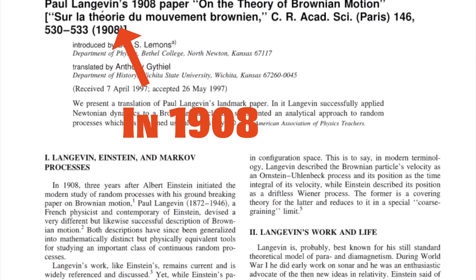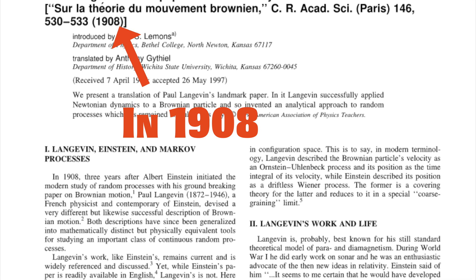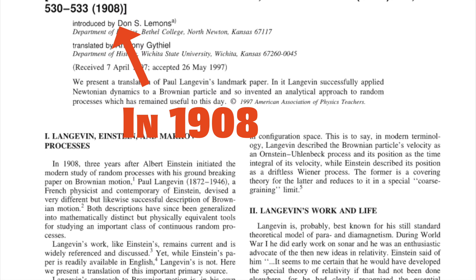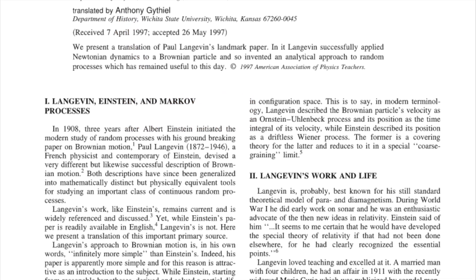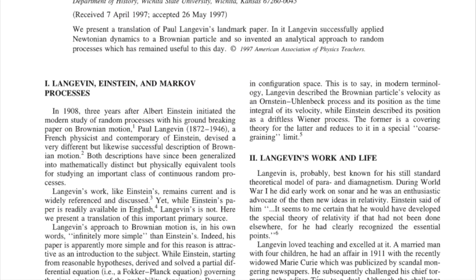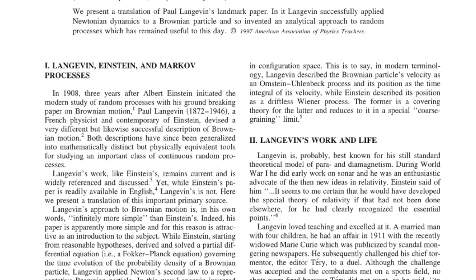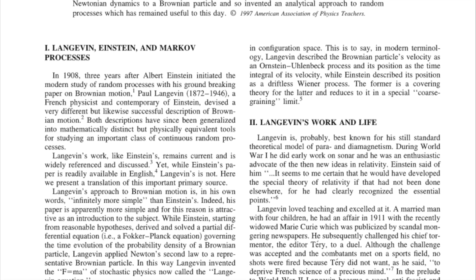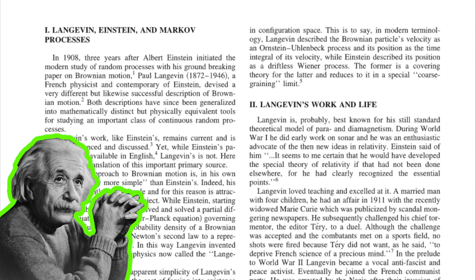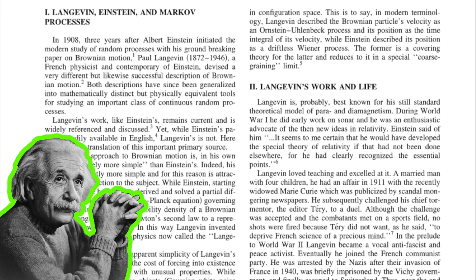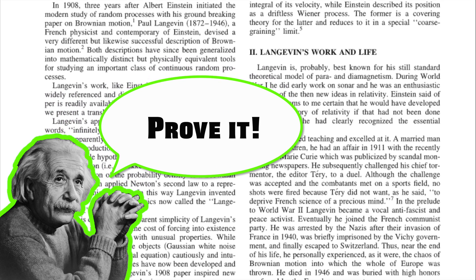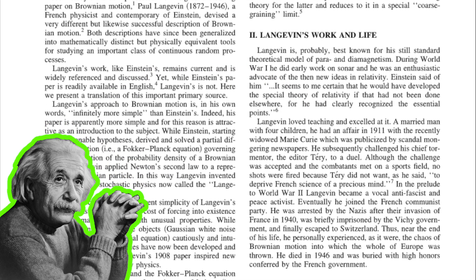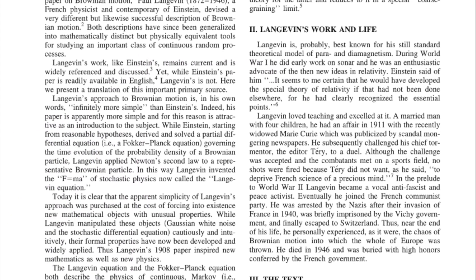In 1908, Einstein had published a second paper on Brownian motion providing even more details than his 1905 original paper, and suggesting a way to test his theory experimentally. Einstein's theory on Brownian motion offered experimentalists the possibility to prove that molecules exist, despite the fact that molecules themselves are too small to be seen directly.